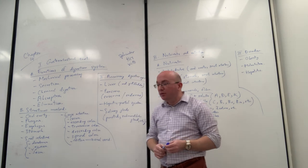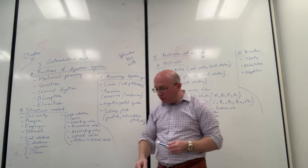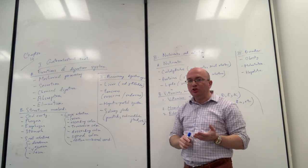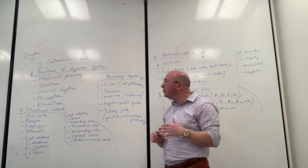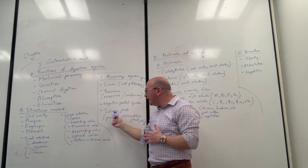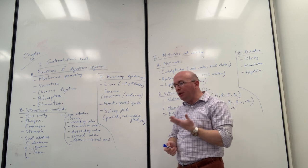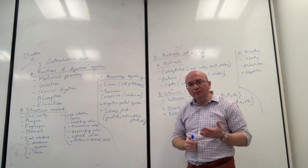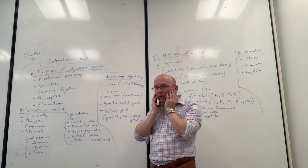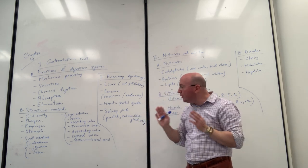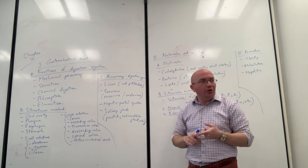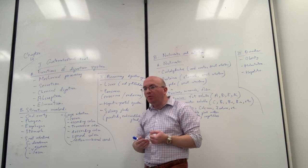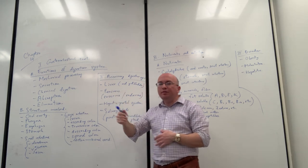Now for the accessory structures: these are not major organs that food passes through, but they are still very important solid organs in the digestive tract. These include the liver, the pancreas, and the salivary glands. The salivary glands — such as the parotid gland on the sides of the head, the submandibular gland under the jaw, and others — all secrete saliva into the oral cavity to mix with food, making it moist and secreting enzymes to begin breaking down carbohydrates.